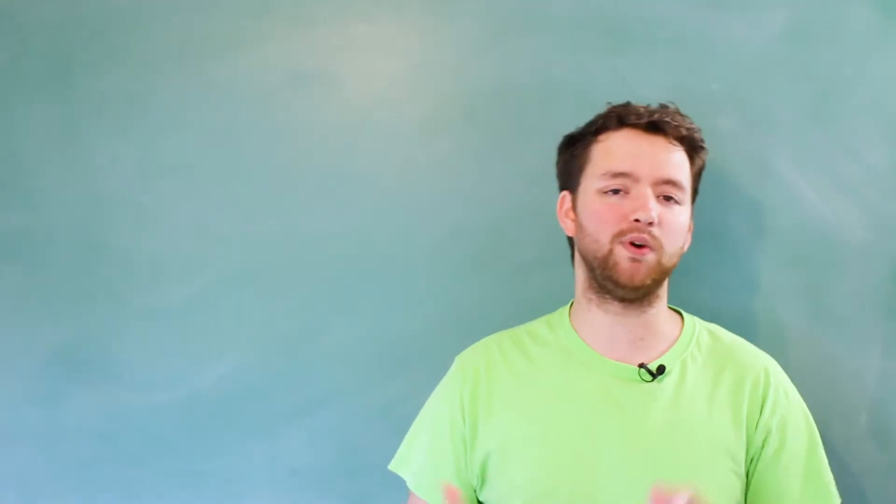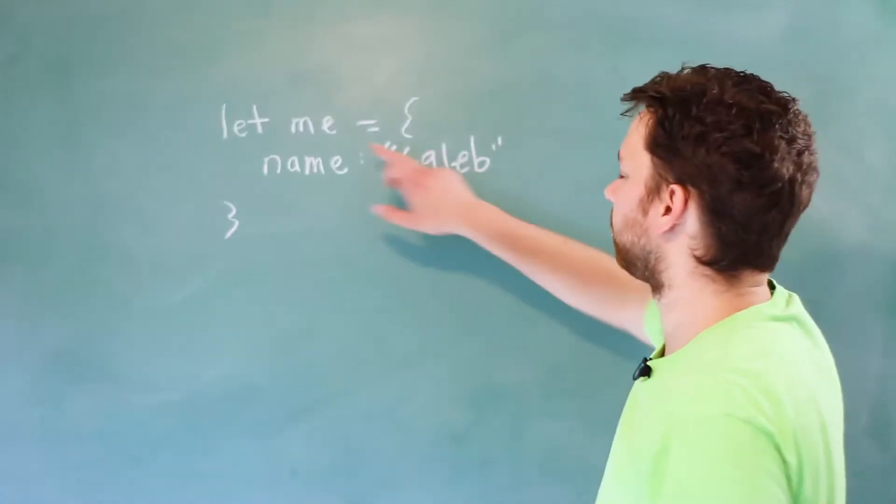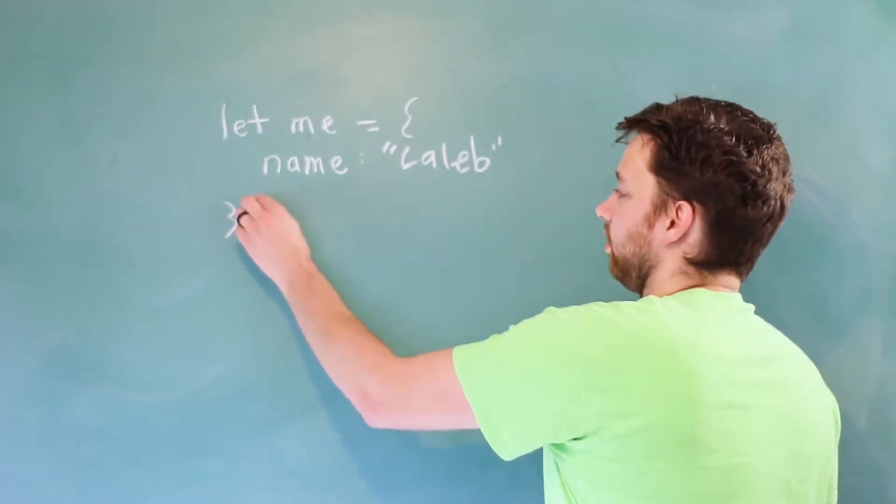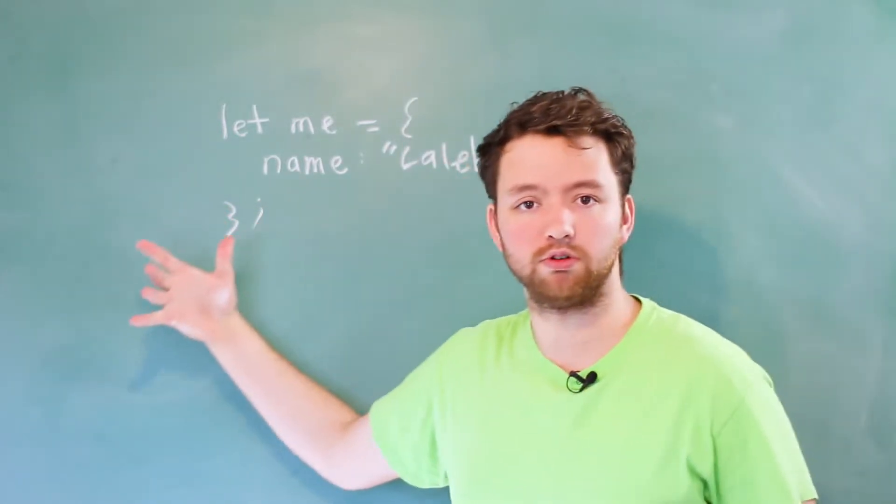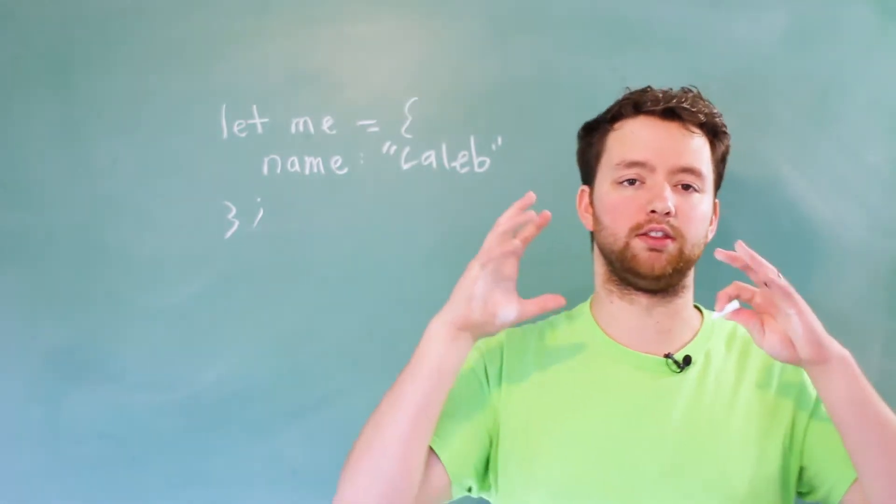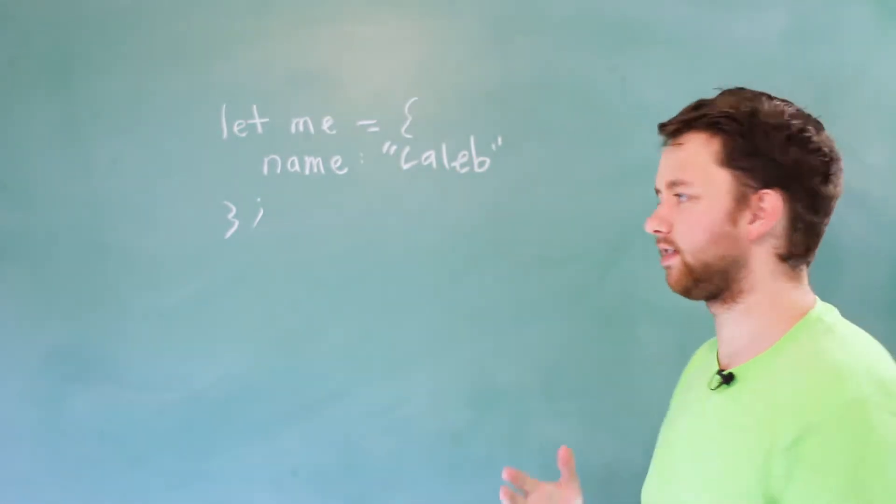All right, so we're going to be talking about what you need to know when it comes to this inheritance stuff. Let's go through an example where we use an object literal. So we're creating this object and we're just using the curly braces to create an object on the spot. This is known as an object literal, but when we're doing this, it's essentially the same thing as calling the object constructor, which would look like this.